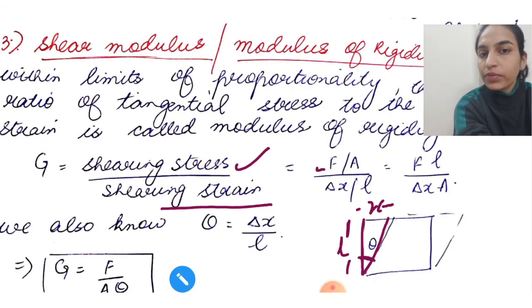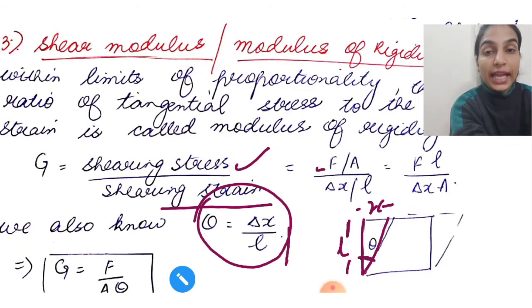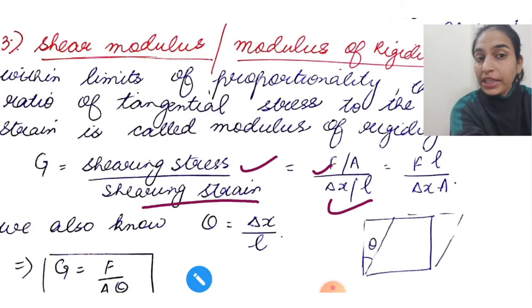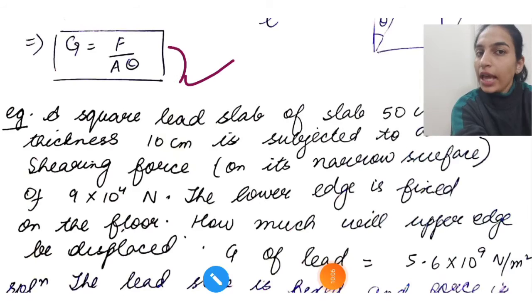This is your delta X, this is your original length L. So strain is delta X upon L, which is also equal to theta. We know that tan theta is delta X by L, but for small theta, tan theta is equal to theta. This is why we can write that theta is delta X by L. If this is not clear, then go to the previous lecture and then come back here. Shearing stress is force upon area, shearing strain is delta X by L, which can be written as theta. So basically, G is F upon A theta.